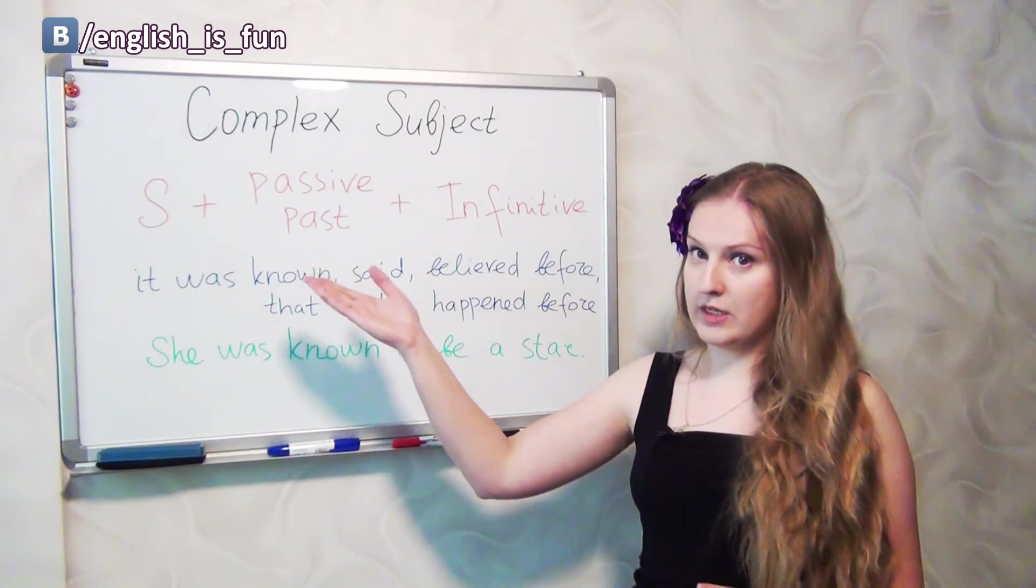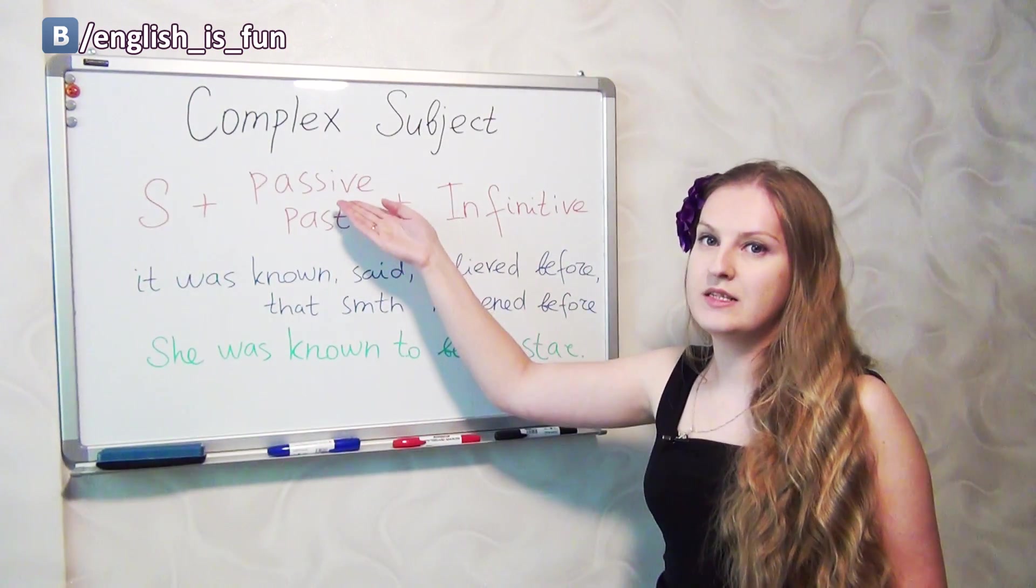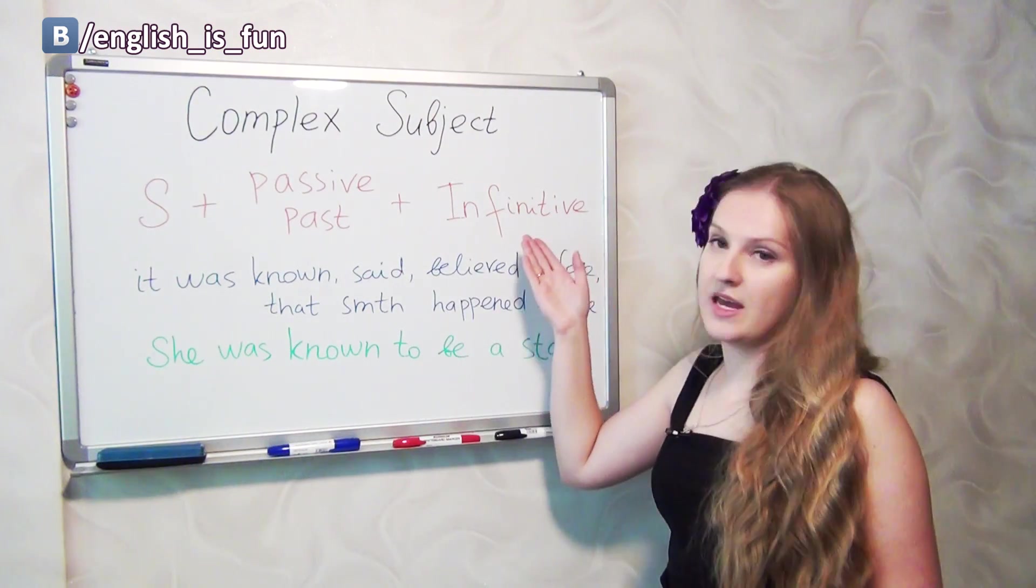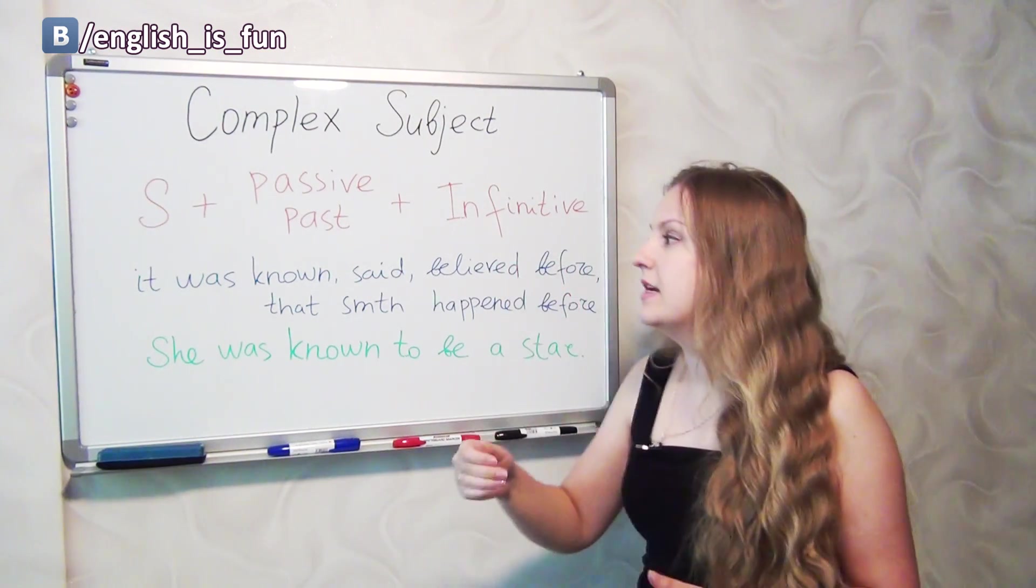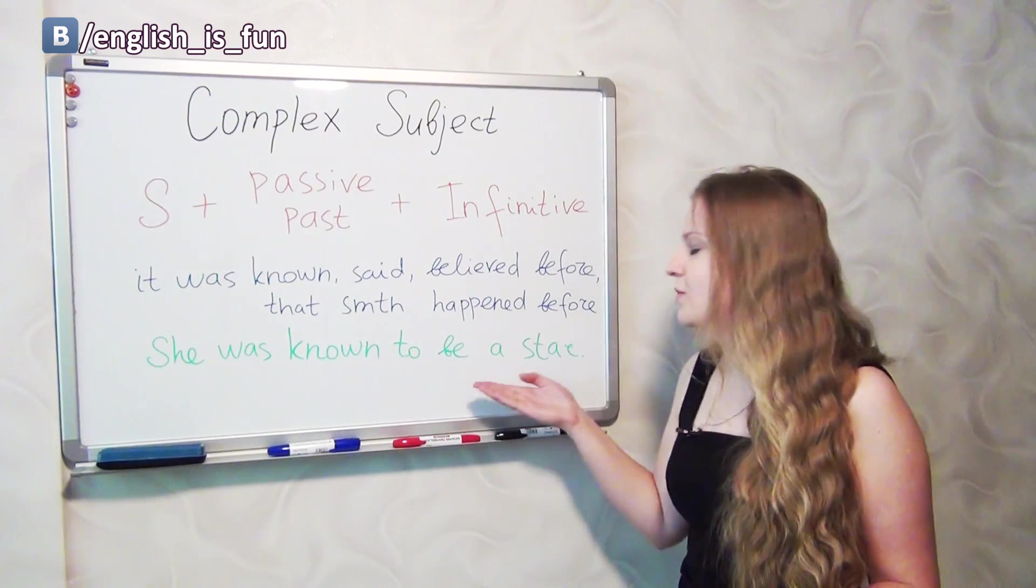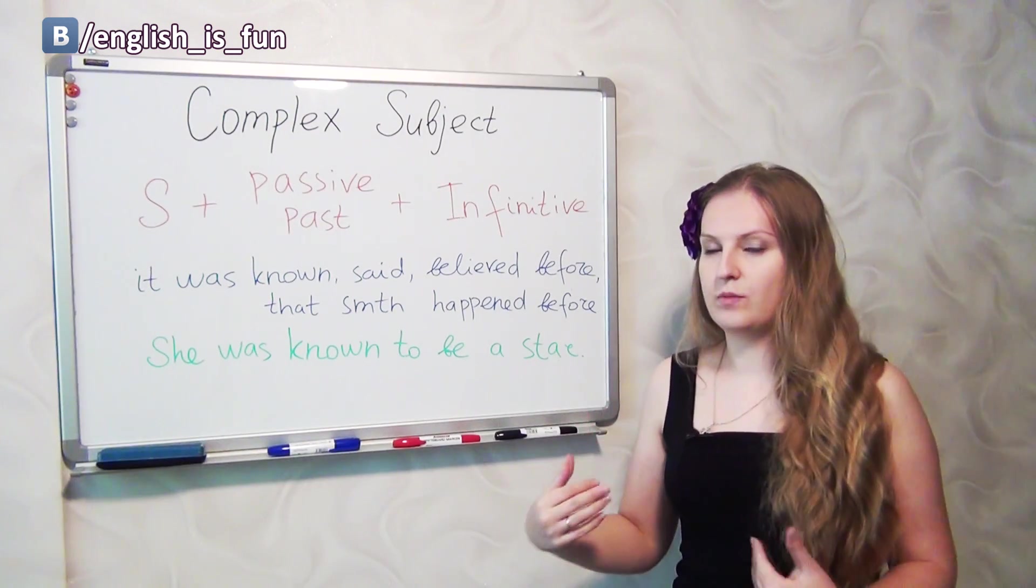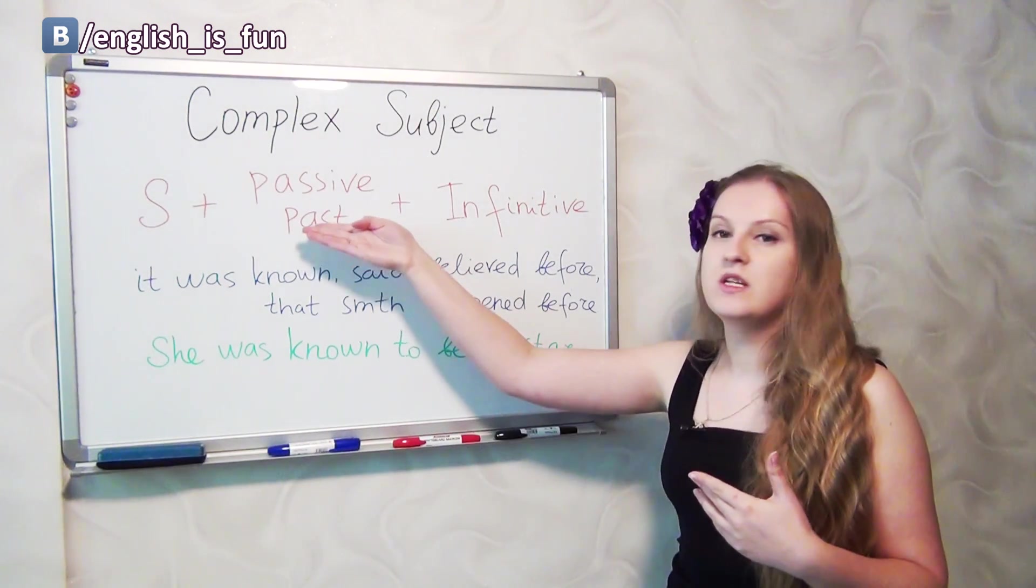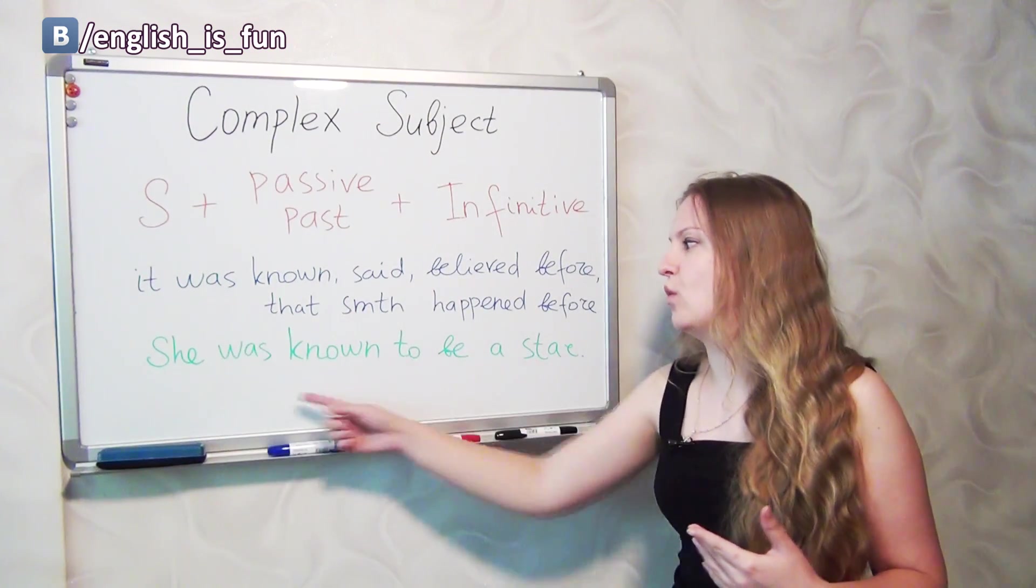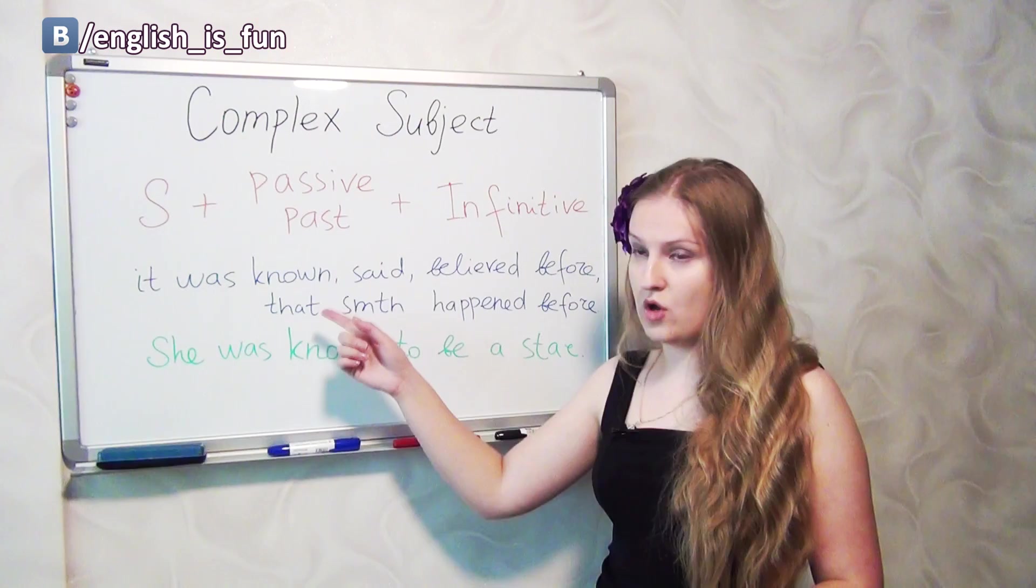If we use the following construction, we use the subject, then we use passive voice and we use past simple. And after that we just use infinitive. We get the sentence like she was known to be a star. We say she, not she is known, but she was known. So we use past simple in the passive form, she was known.